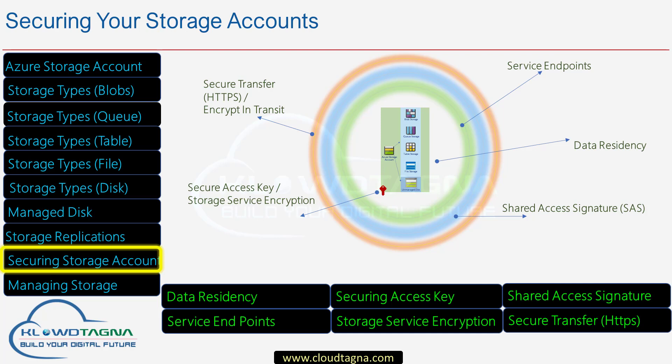Now let's look at the storage account from a security perspective. To secure your storage account, here are some high-level steps to follow: first, create the storage account in the right region as per your data residency guidelines. Then secure the storage access key — you can use services like Key Vault to securely store your access key. You can also create a Shared Access Signature to provide restricted access for your applications. Use service endpoints to limit your storage account within a selected network, and enable secure transfer so your data remains protected during transit.